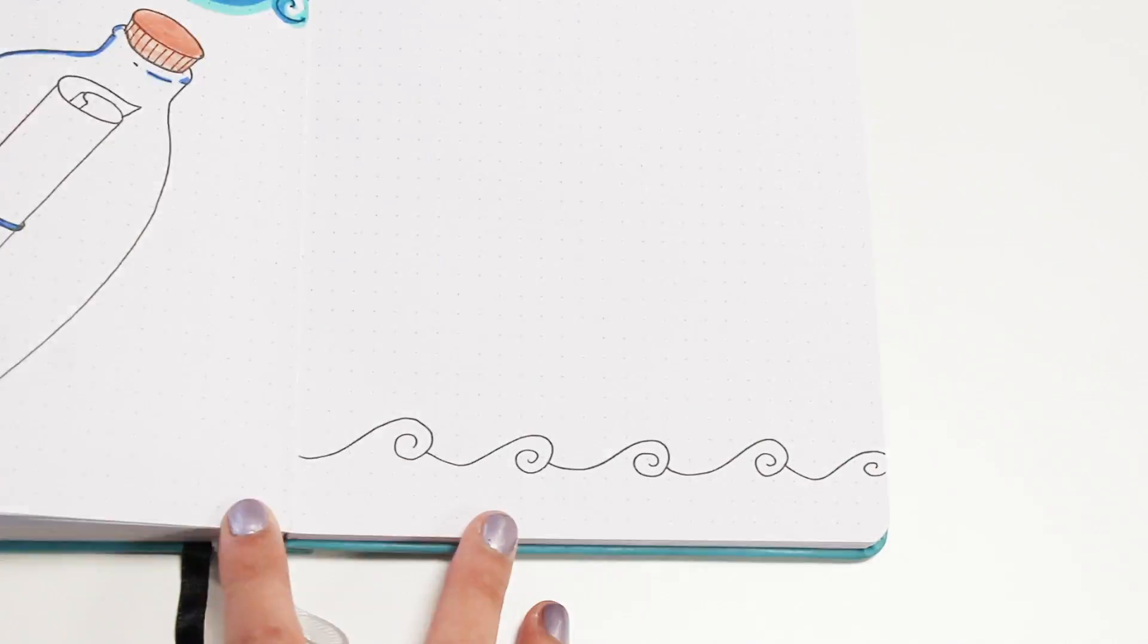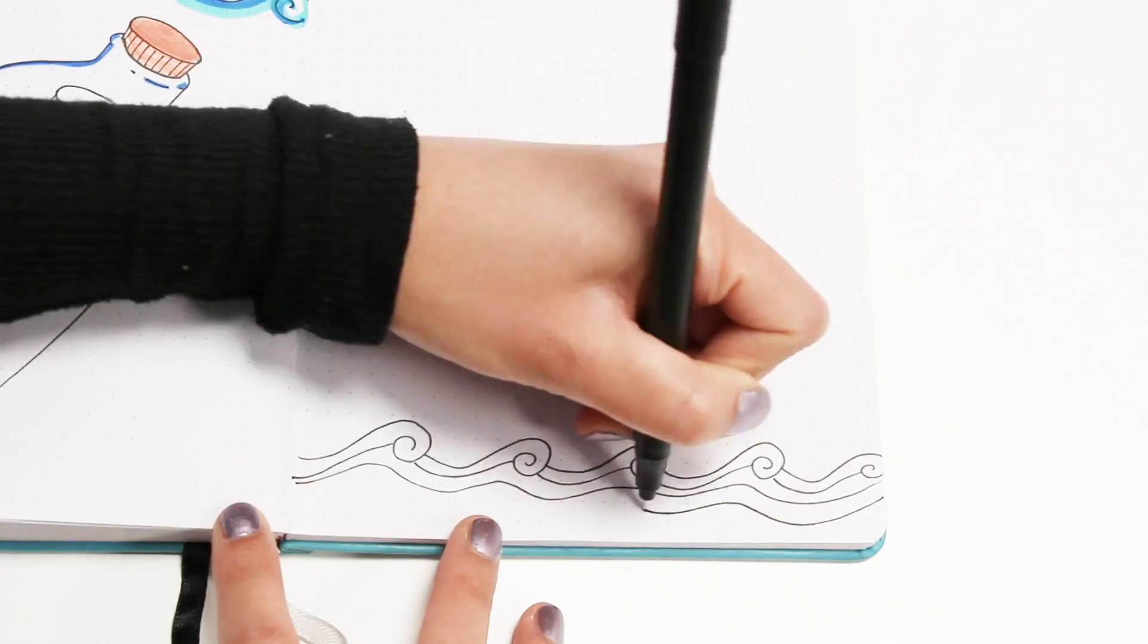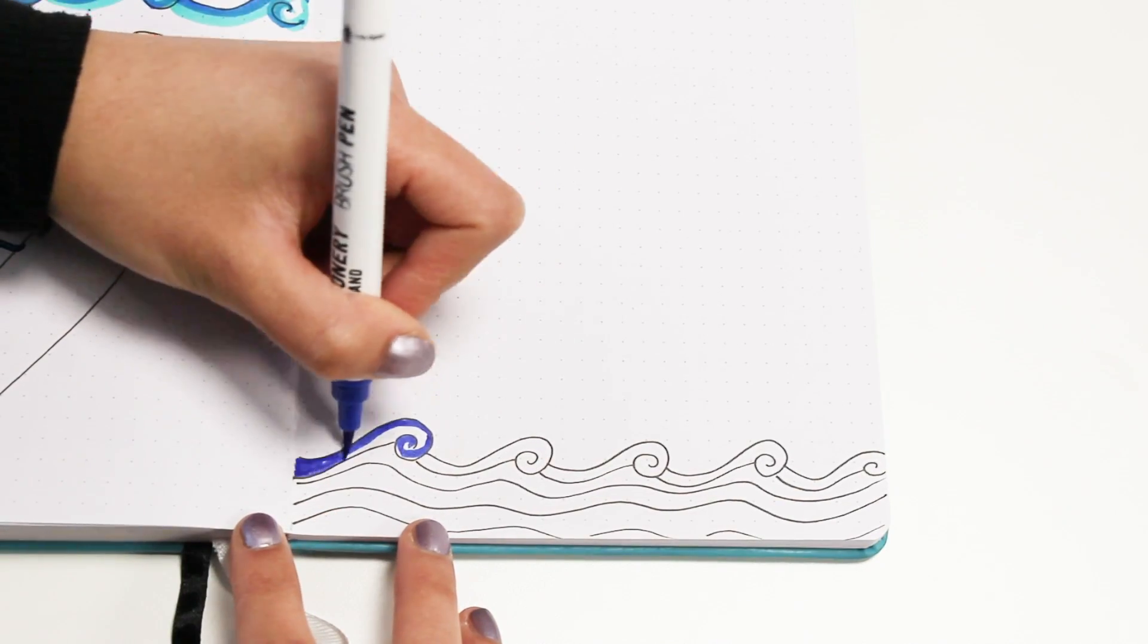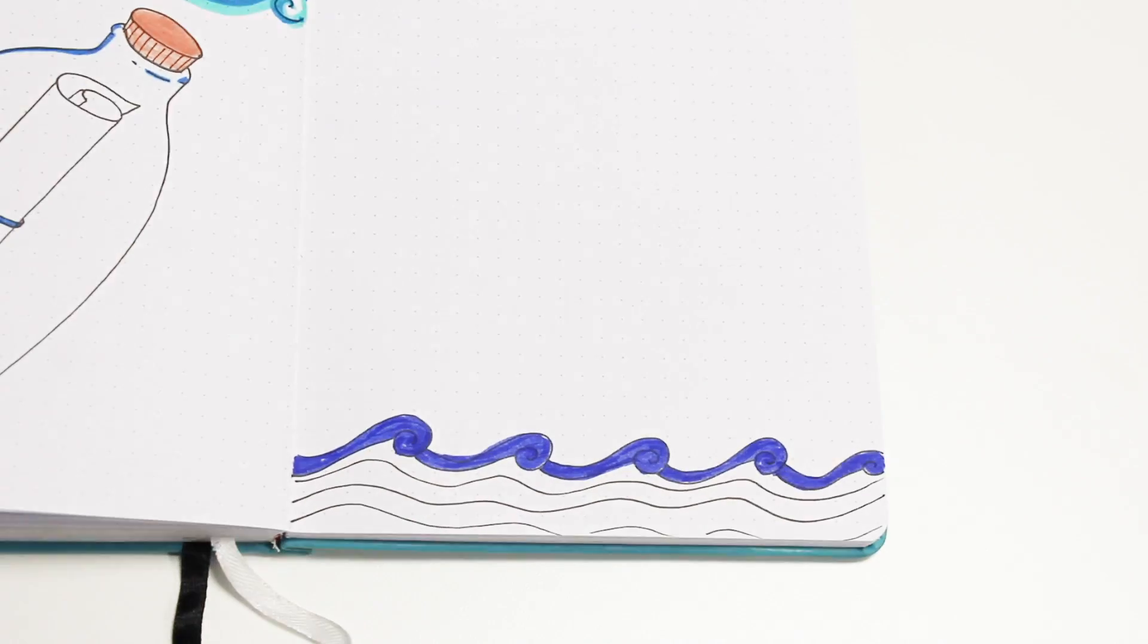On the right side of the spread, I have a page for video ideas. It's pretty simple and straightforward. I'm just writing the title and then I'm drawing more waves at the bottom of the page to keep the theme consistent.